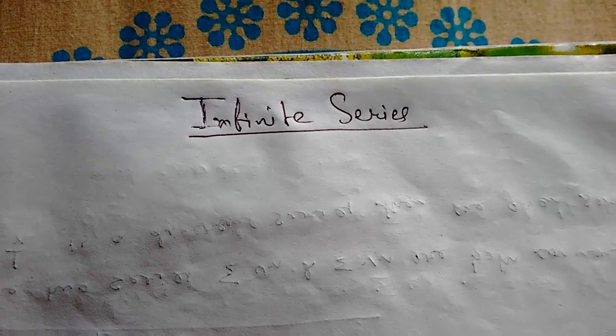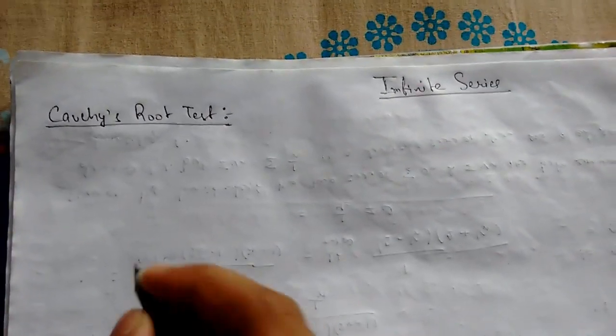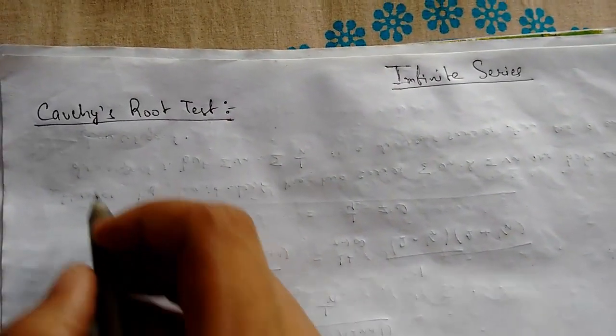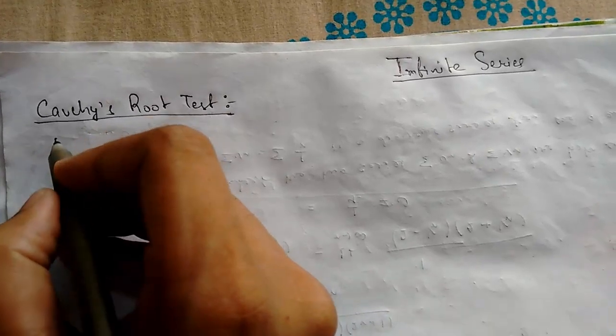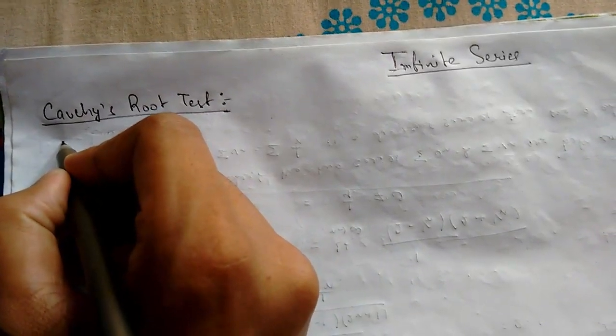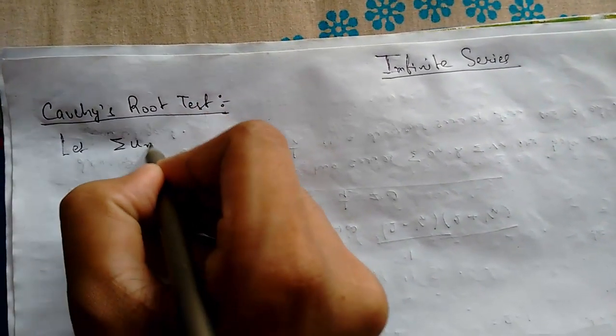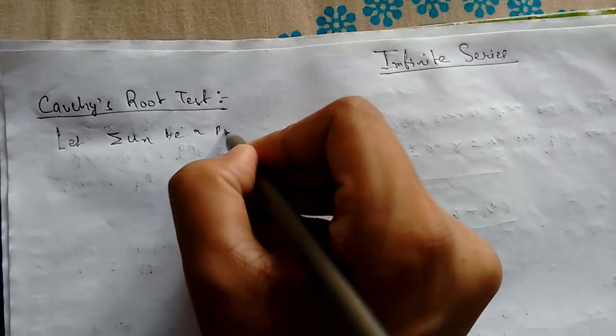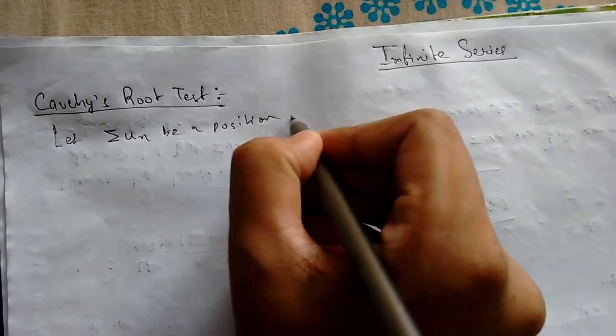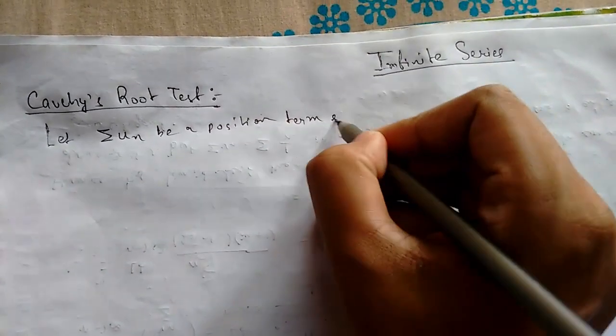Hi guys, today we will be continuing our lectures on infinite series. Today we will be learning about Cauchy's Root Test for checking the convergence of a series. Let me define it: Let summation u_n be a positive term series